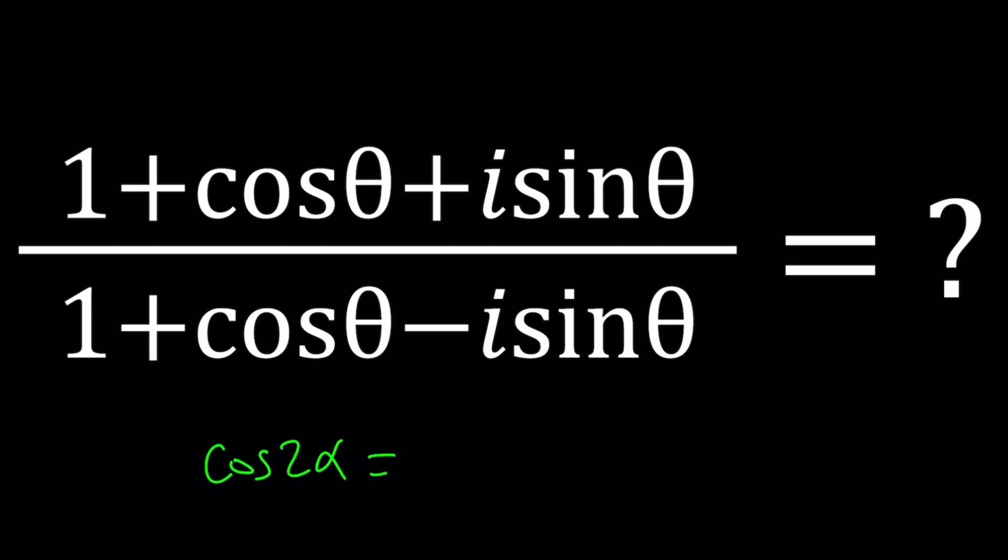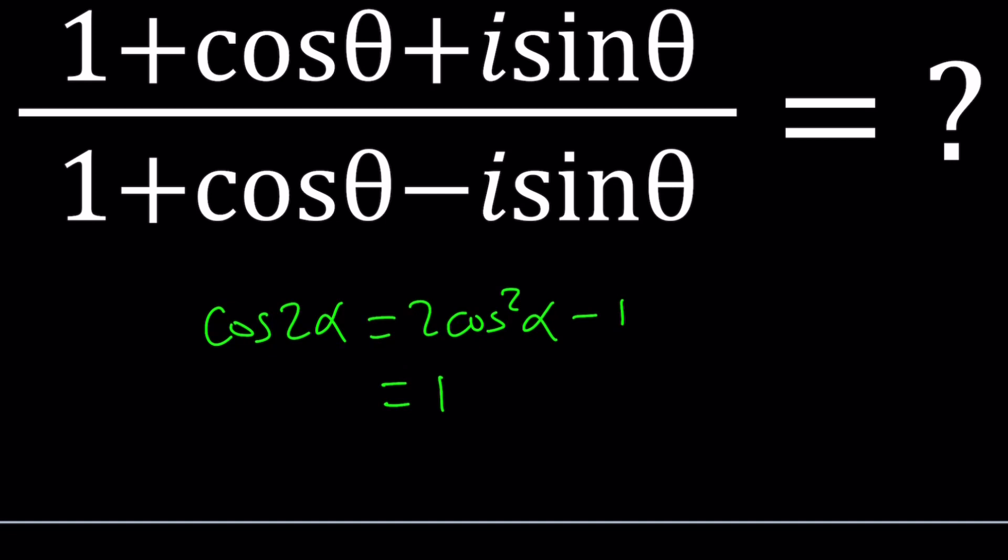How about cosine of 2 alpha? That can be written in three ways, right? 2 cosine squared alpha minus 1, and 1 minus 2 sine squared alpha. So, I mean alpha. So, which one are we going to use? Let's take a look.